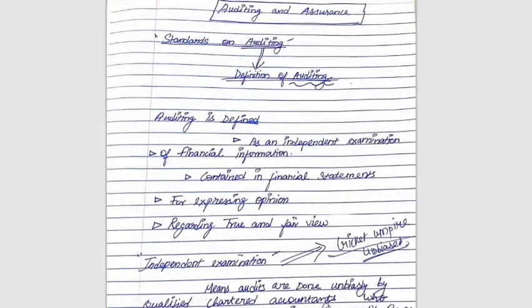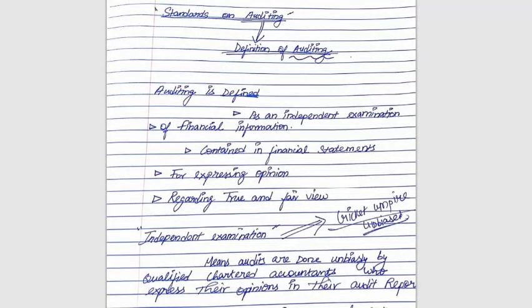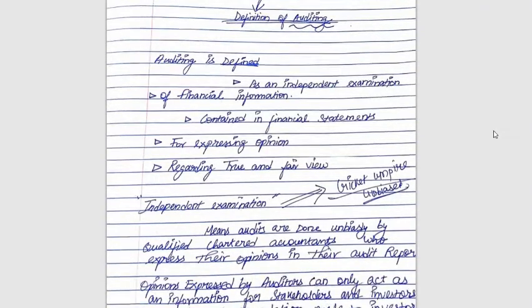So auditing is defined as an independent examination of the financial information contained in financial statements. As an auditor, you go to a client's office and independently examine the purchases by looking at the trading and P&L account, comparing it with the purchase diary and purchase book throughout the year. After doing this independent examination of the financial information in the financial statements, you will express an opinion.